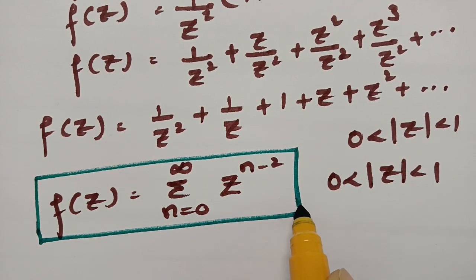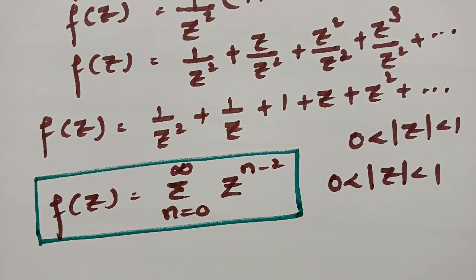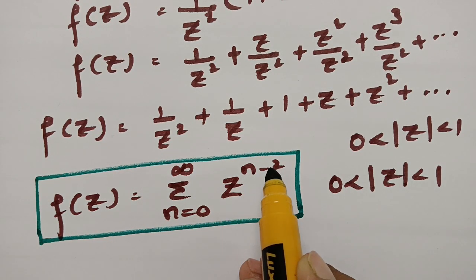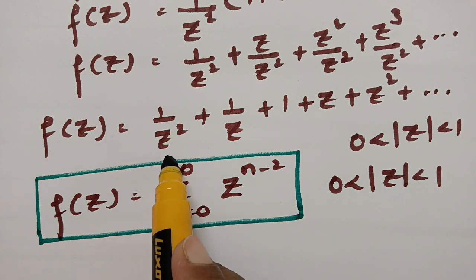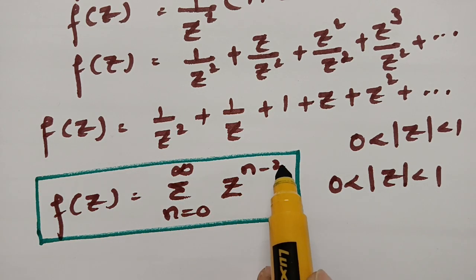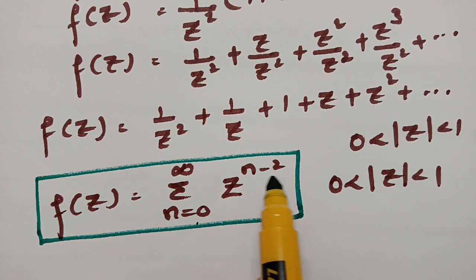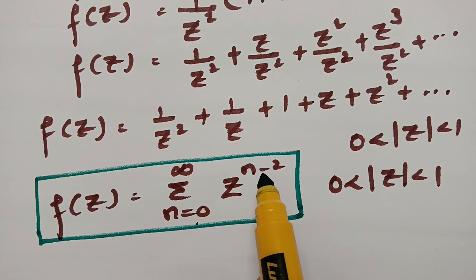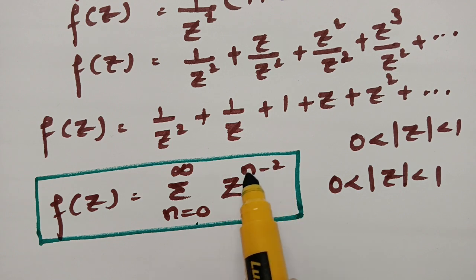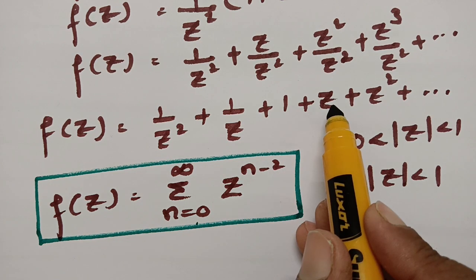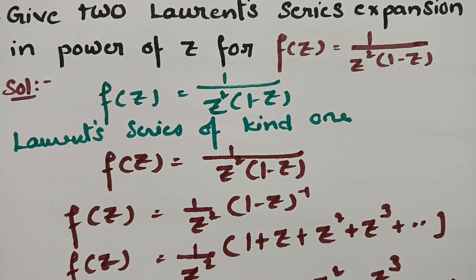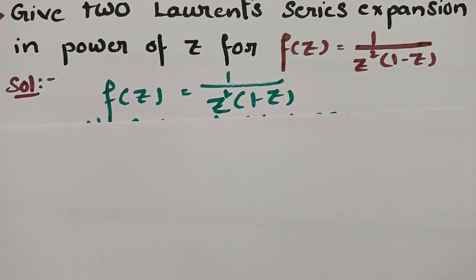We need two types of Laurent series. In the first series, putting n = 0 gives z^(−2) = 1/z²; n = 1 gives z^(−1) = 1/z; n = 2 gives z⁰ = 1; n = 3 gives z¹ = z; and so on. This is one kind of Laurent series.